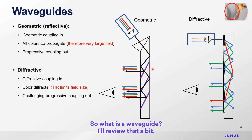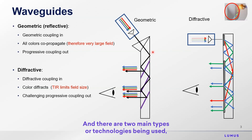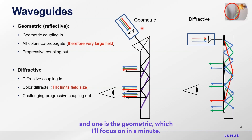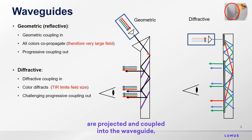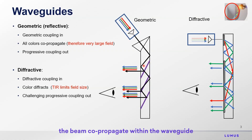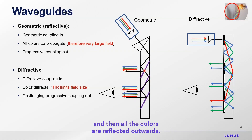So what is a waveguide? There are two main types of technologies being used. One is the geometric, which I'll focus on. That would characterize this: all colors are projected and coupled into the waveguide. The beam propagates within the waveguide by total internal reflection, and then all the colors are reflected outwards.